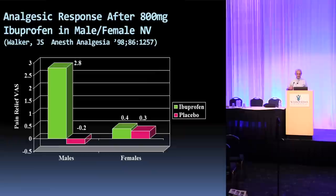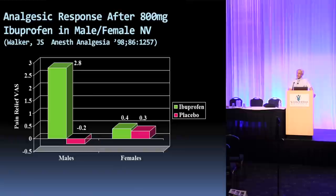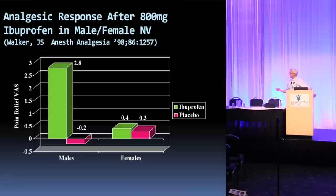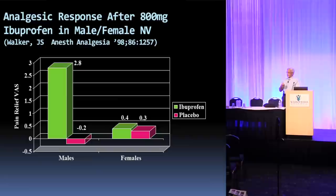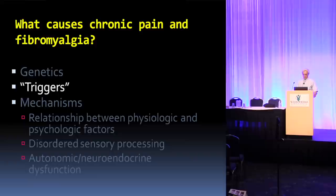This is a very interesting study. They took normal males and females and gave them all 800 milligrams of Advil. Interestingly, women had more difficulty — they didn't get the same response compared to the placebo, whereas the men did. So there is a difference in gender predisposition to response to pain medications, and it's harder on women. Women don't respond as well to some of the standard medicines. It's not that they're imagining it — there's a real reason for this.